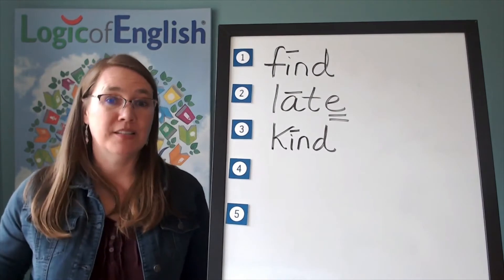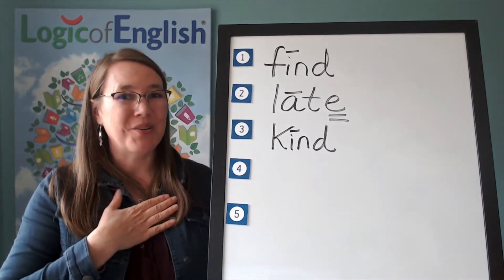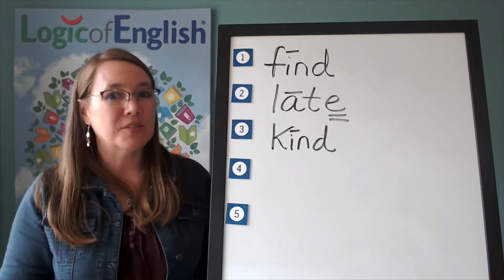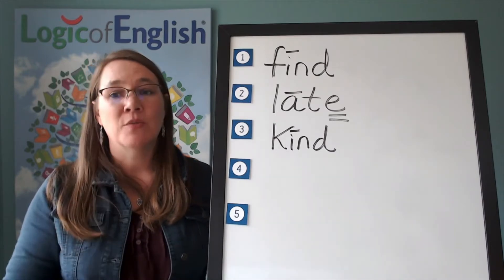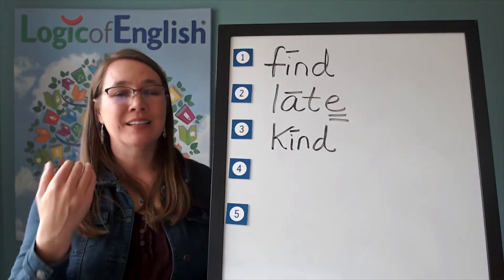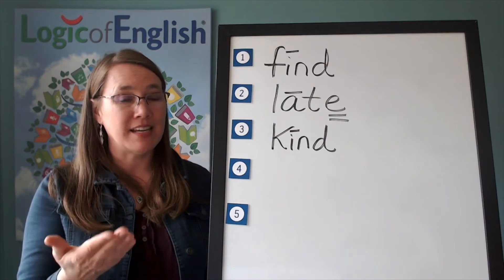The next word is teacher. I am a teacher. Go ahead and say teacher. Teacher. Teacher. How many syllables in teacher? Two. We will say to spell teach-er. What do we say to spell? Teach-er. The first syllable is teach.